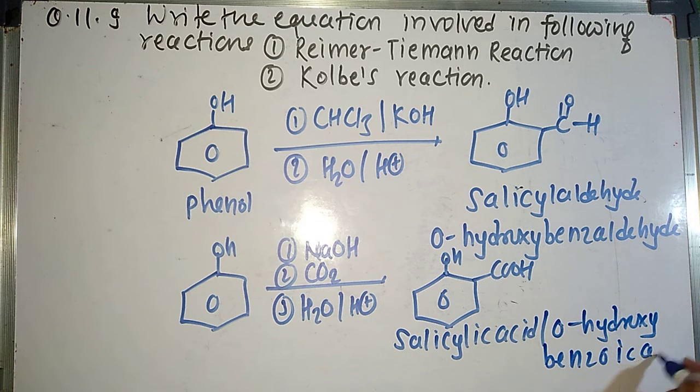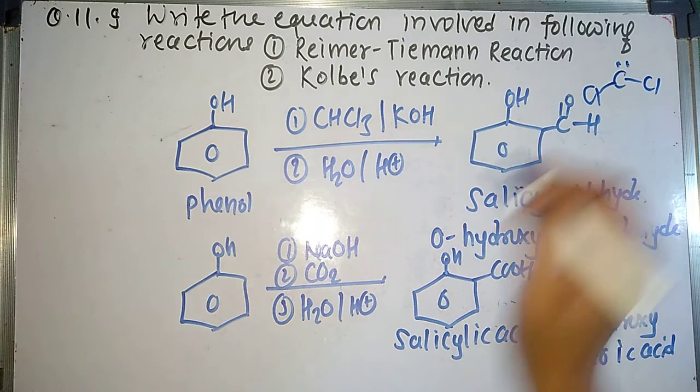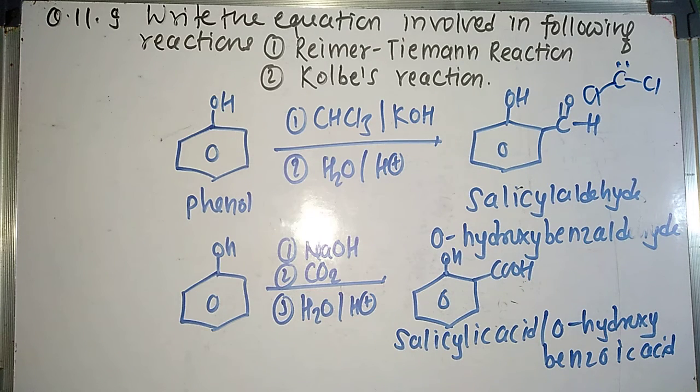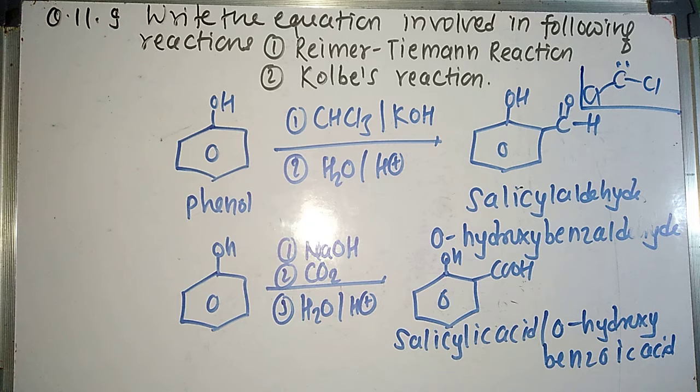So these two reactions are nothing but Reimer-Tiemann reaction and Kolbe's reaction. Remember in Reimer-Tiemann reaction we get dichlorocarbene as a reaction intermediate. Dichlorocarbene is produced during the conversion of phenol into salicylaldehyde. So in NEET examination or JEE examination, that MCQ will be asked to you: which intermediate is produced when phenol gets converted into salicylaldehyde.